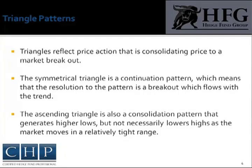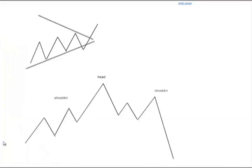Triangles reflect price action that is consolidating and poised to break out. During a triangle pattern, prices generally move within a well-defined range, making lower highs and higher lows as the triangle is formed. This represents a triangle as the market is making higher highs and lower lows, poised potentially to break out to the upside.